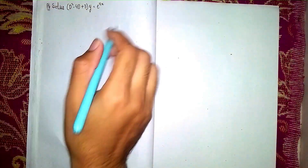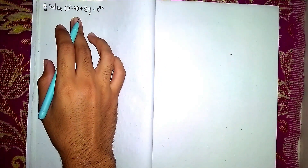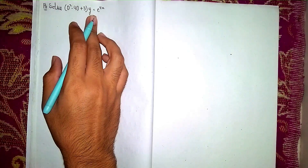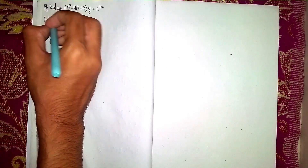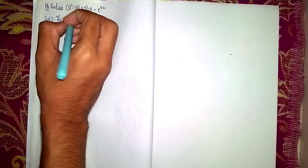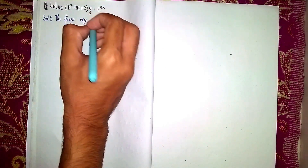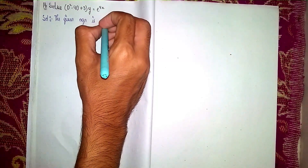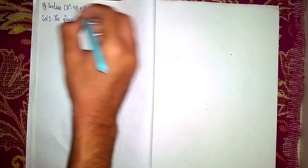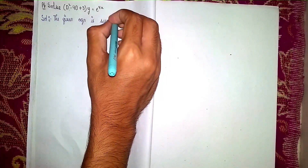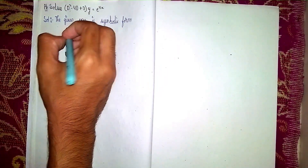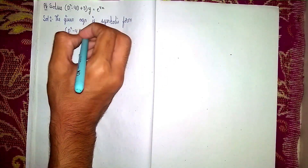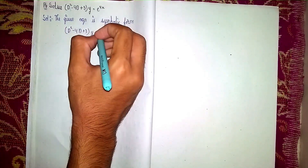Hello students, welcome back to my channel. I am going to solve d squared minus 4d plus 3 into y is equal to e power 4x. This is a non-homogeneous linear differential equation. The equation is given in symbolic form using capital D.